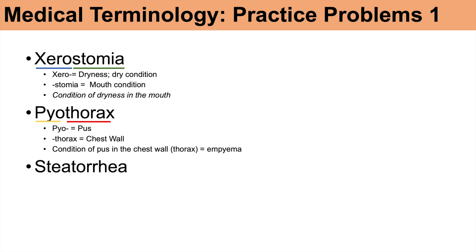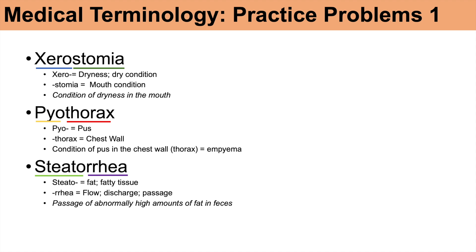The next word is steatorrhea. Breaking it down: 'steato' means fat or fatty tissue. 'Rhea' — you can think of flow, discharge, or passage, like in diarrhea. So steatorrhea simply means a passage of abnormally high amounts of fat in feces.